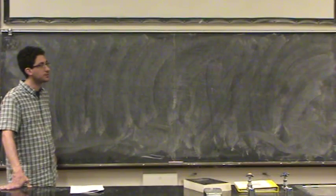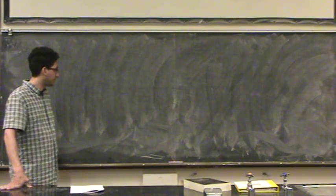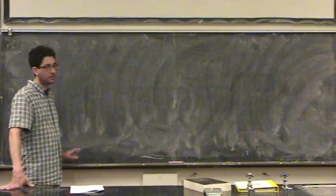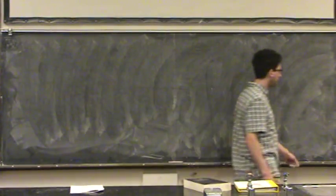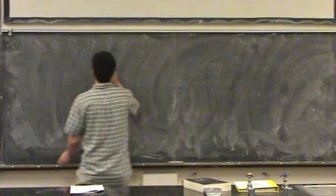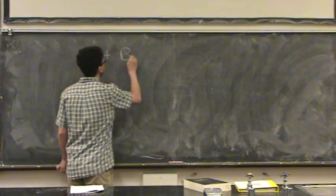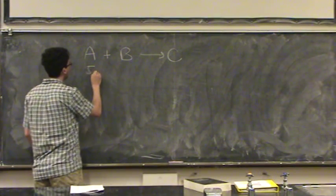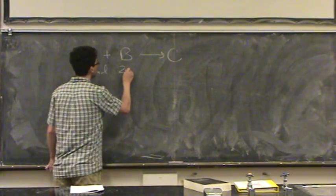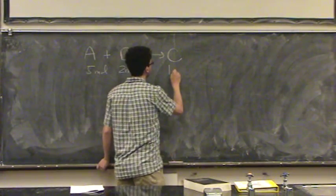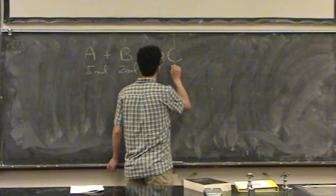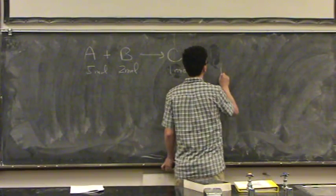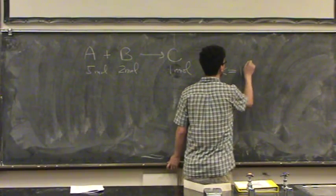You're also going to do it in the upcoming chapters, whenever the unfavored side doesn't have a zero. So now let's do a little bit of math. So if you have a problem where A plus B goes to C, and this is 5 moles, this is 2 moles. Let's say this is 1 mole, and let's say, in this case, K is equal to 10 to the 6th.